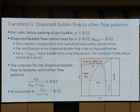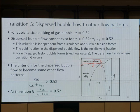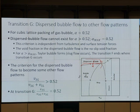This criterion is independent from turbulence and surface tension force. The void fraction in dispersed bubble flow is a no-slip void fraction. Alpha greater than alpha_max — can the bubble flow or slug flow occur? Transition F ends where Transition G occurs. When you draw Transition G, whenever you meet with Transition F, it ends and we use Transition G. The criterion for dispersed bubble flow: V_sg over (V_sg + V_sl) greater than 0.52 means we don't have dispersed bubble flow.